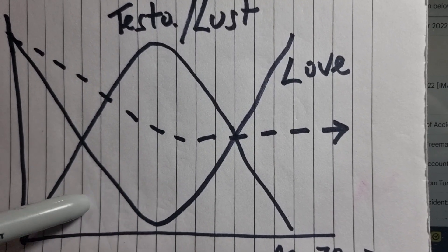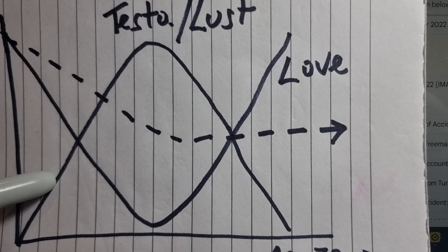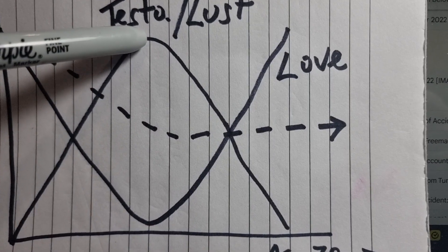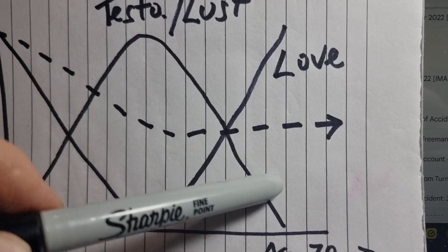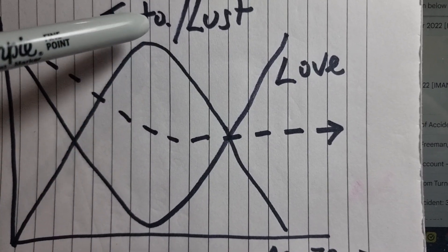This is how men work. So at birth their testosterone levels build up, teenager and then around 30 starts to drop off. So this is all full of testosterone and lust.